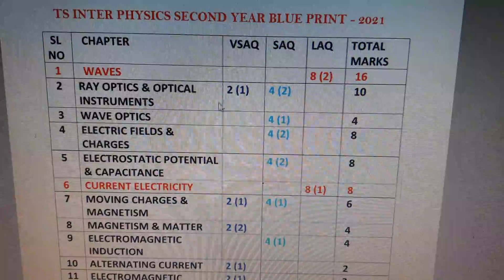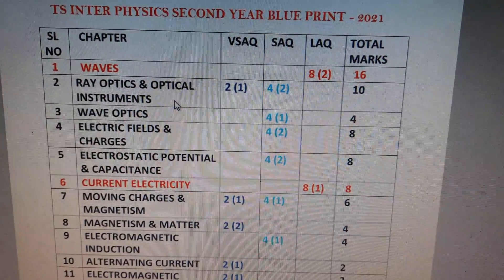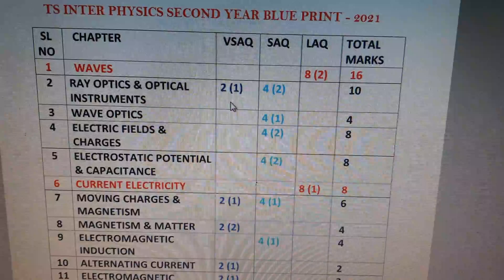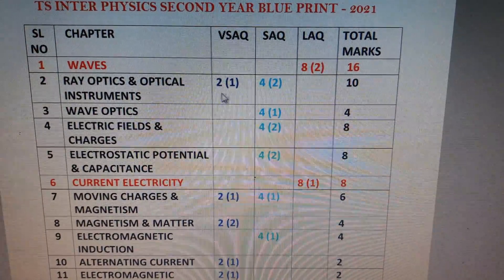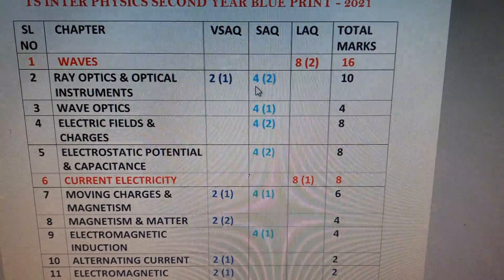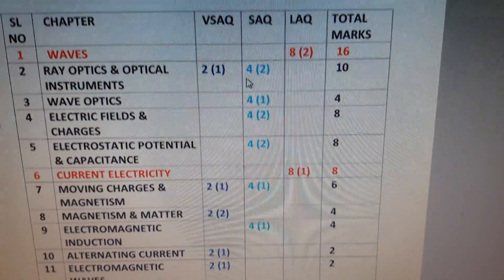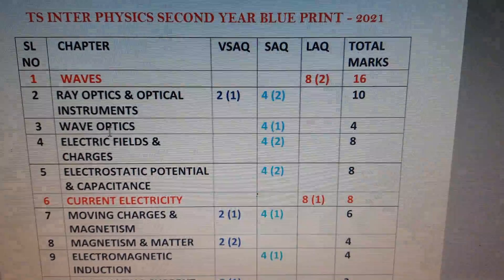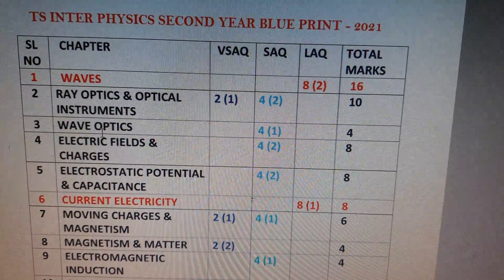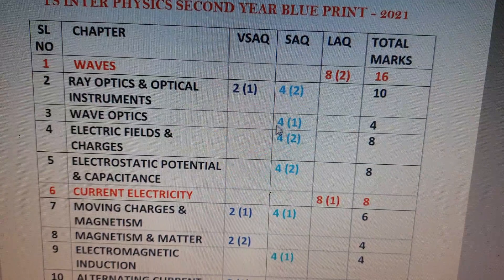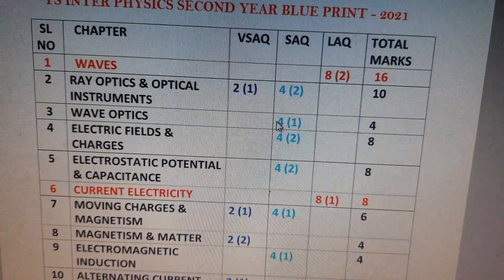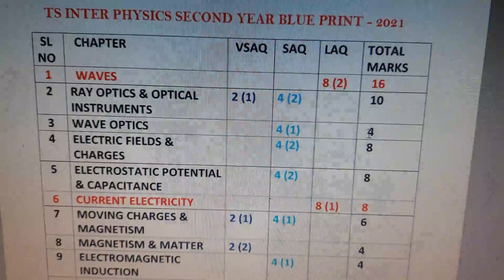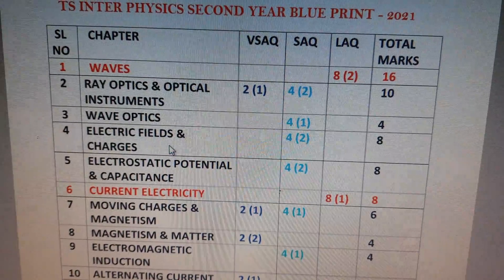The second lesson is Ray Optics and Optical Instruments. In this chapter there will be one very short answer question and two 4-mark questions, so the total weightage of this chapter will be 10 marks. The third chapter is Wave Optics — there will be only one 4-mark question, so the total weightage is 4 marks.